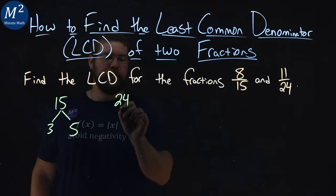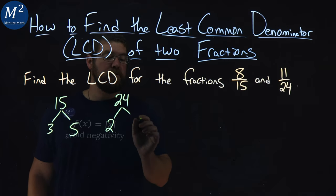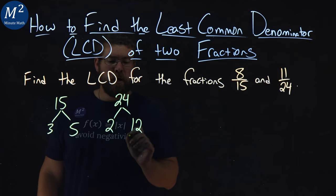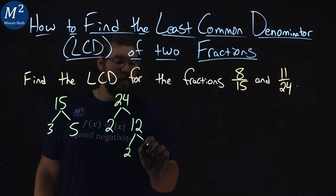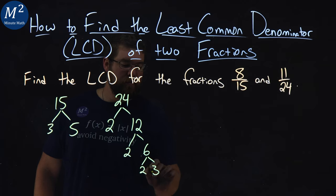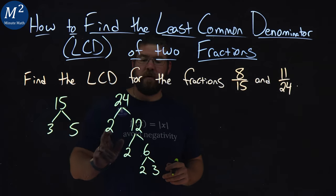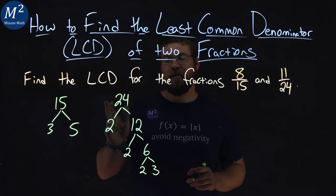What about twenty-four? This one's a doozy. Twenty-four is two times a twelve. Twelve is a two times a six, and six is a two times a three. So we have two times two times two times three is equivalent to twelve.